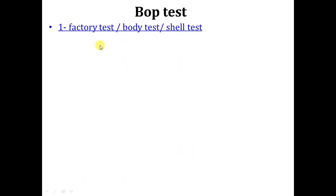There is something called the API. But before we talk about the API, what are the types of BOP test? Before any rig buys a BOP from a factory — like Shaffer, Cameron, Hydra, or other companies — they have to get a certificate. This certificate must confirm that there is a factory test, also called a body test or shell test. All these are the same, but the company must have this certificate.